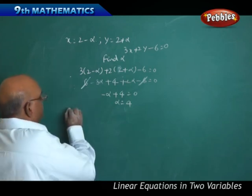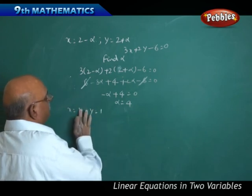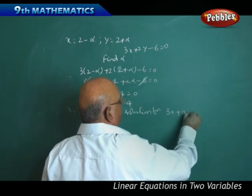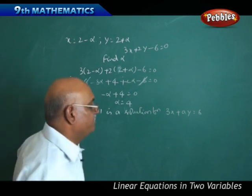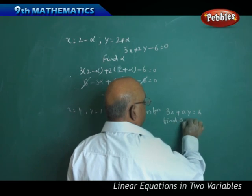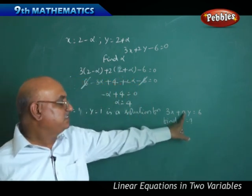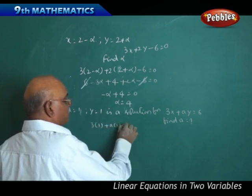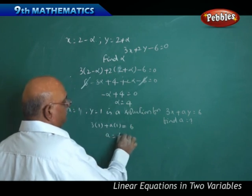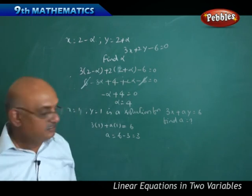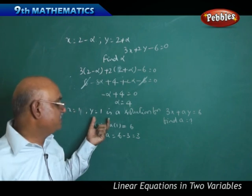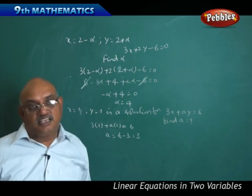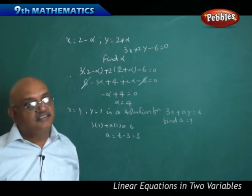The next problem: if x equal to 1 and y equal to 1 is a solution for 3x plus ay equal to 6, find a, the coefficient of y. Replace x and y with 1: 3 into 1 plus a into 1 equals 6, giving a equal to 6 minus 3, that is 3. Therefore a equal to 3 is the answer. Now I want to find out whether we can find any line parallel to the given points.